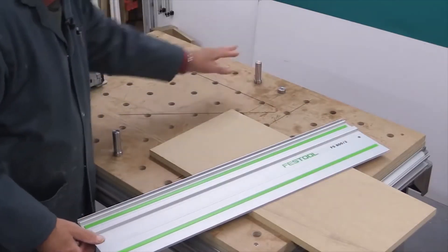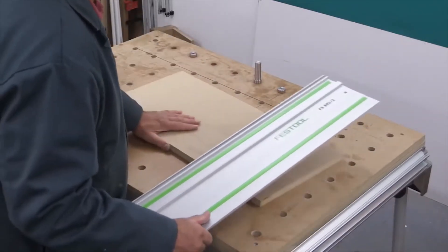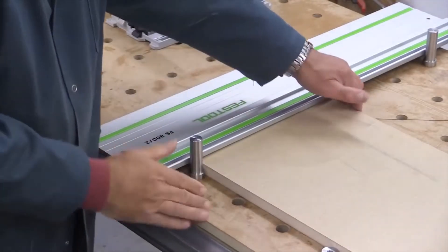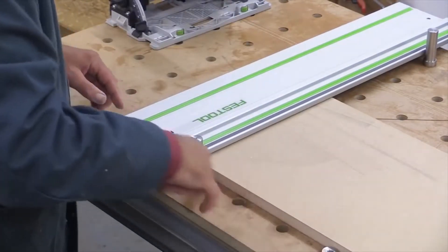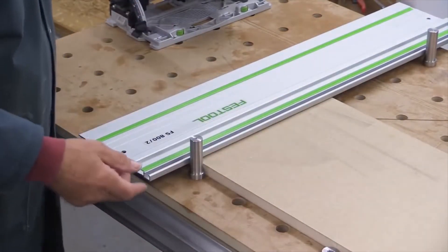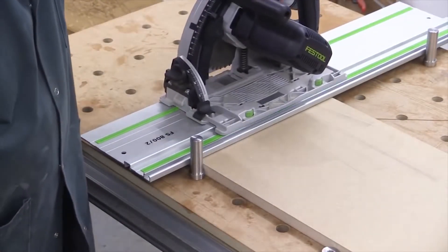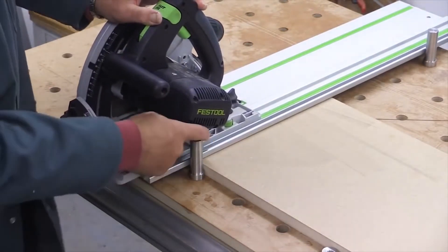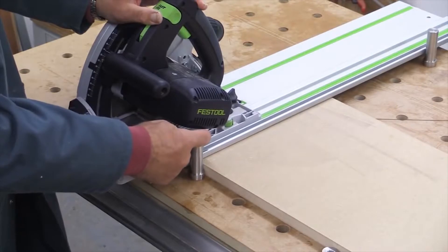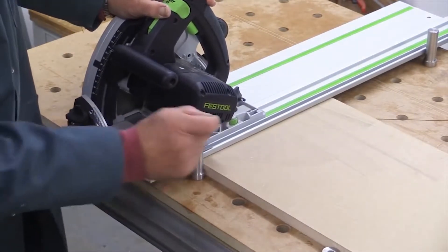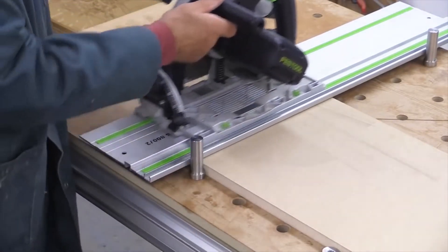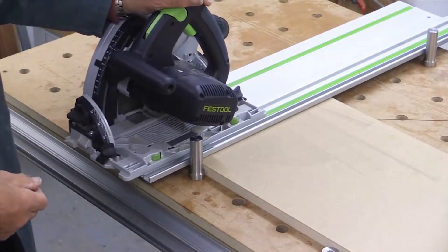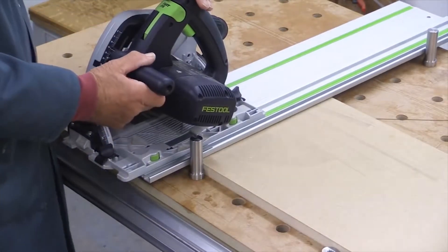There is another issue. If I put in some ordinary Parf dogs, the tall ones here and the shorter ones there, and bring my stock up against this and my guide rail up against there, in certain circumstances depending on the thickness of your stock and whether you've got the smaller dogs in this line or the next line, and it also depends on which saw you're using, at the end of your cut it's possible for the saw housing to interfere with this final dog.